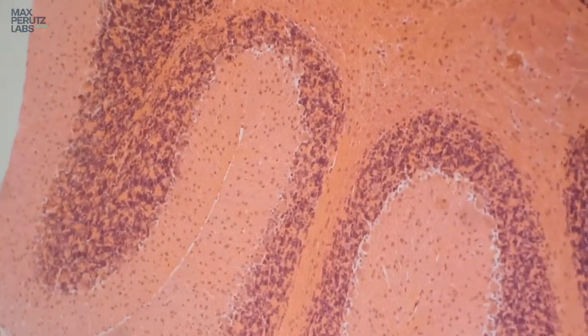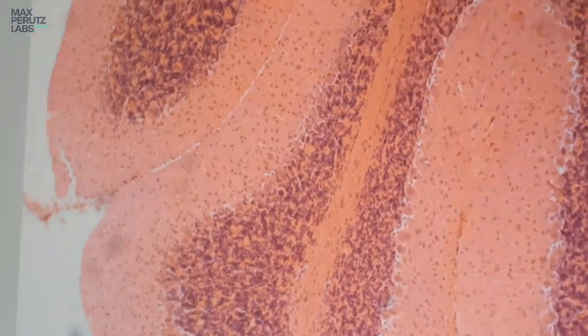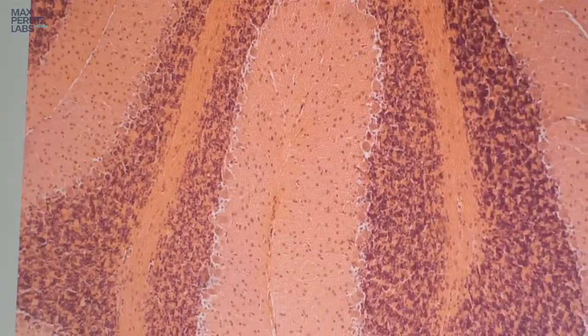What you see here is hematoxylin-eosin stained small brain section. You see nuclei in blue and cytoplasm in shades of pink. One can say the histology lab is small but most versatile to meet as many requirements of our users as possible.